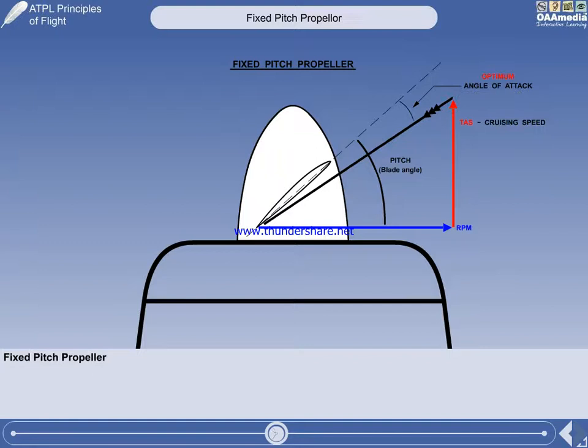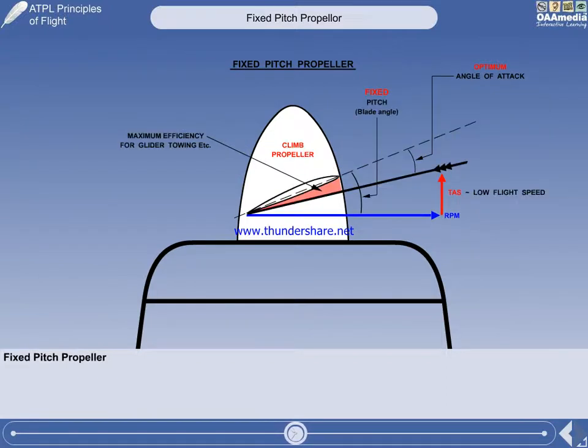Now the angle of attack is optimum for maximum efficiency in the cruise. You could think of it as the propeller being able to accelerate just the right amount of air rearwards for the engine power output. If we look again at the fixed-pitch climb propeller, you can see that it has maximum efficiency at low flight speed.